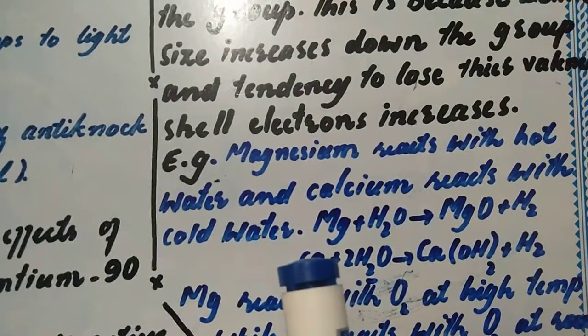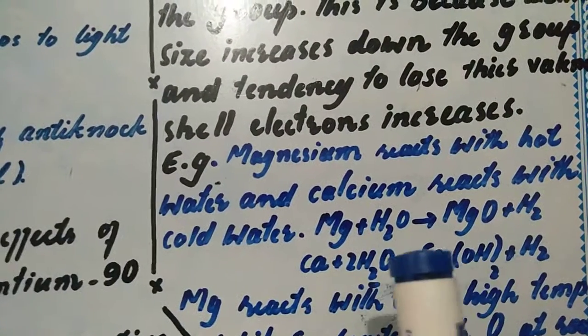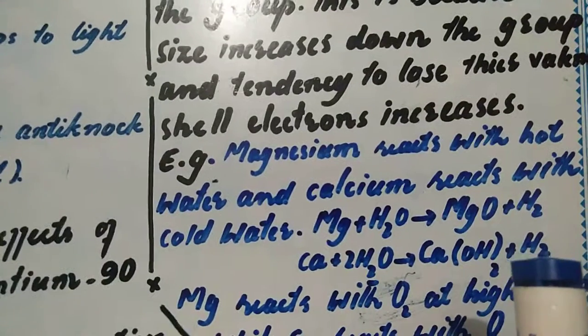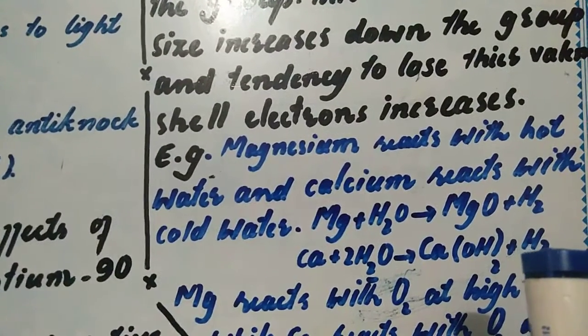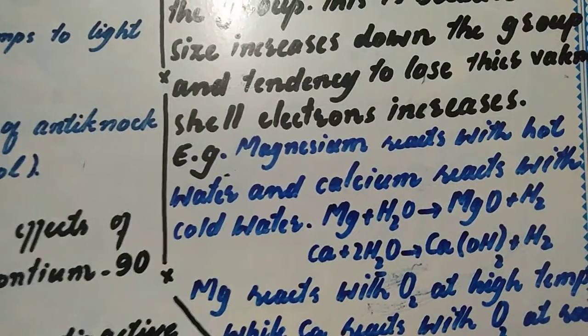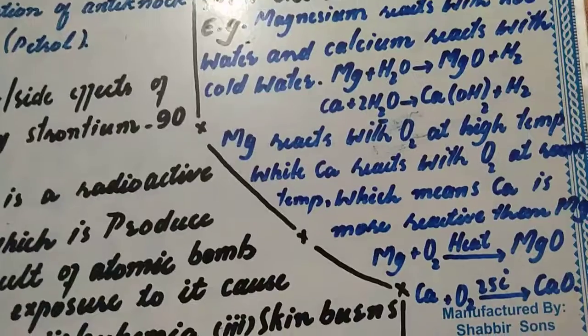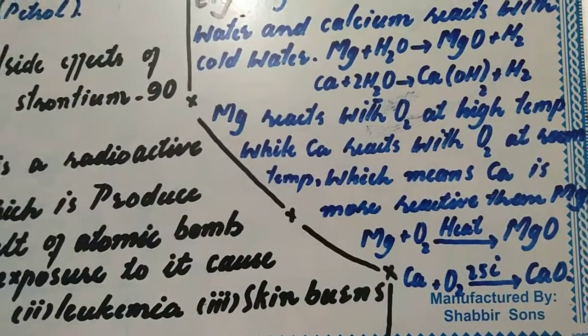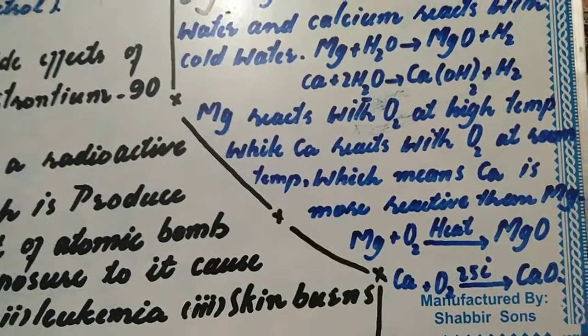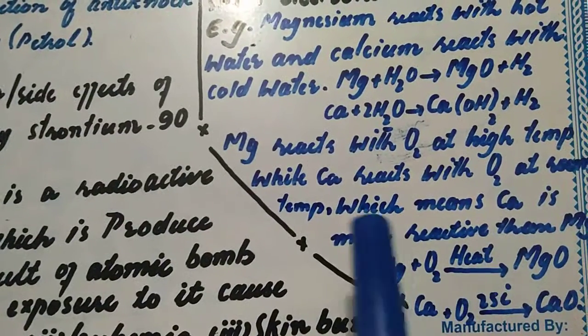Magnesium with water produces magnesium oxide and liberates hydrogen gas. Calcium with water produces calcium hydroxide and hydrogen gas at room temperature. We can use these elements for hydrogen gas production.